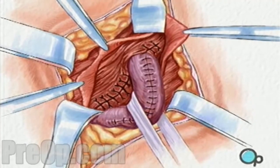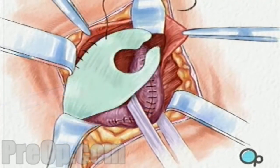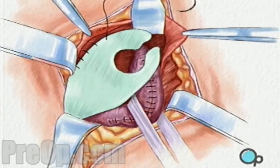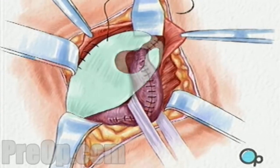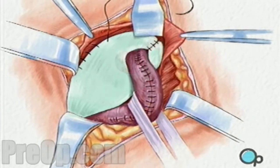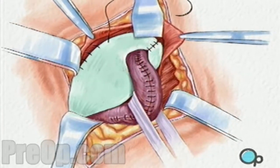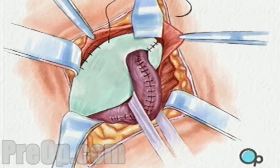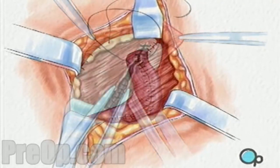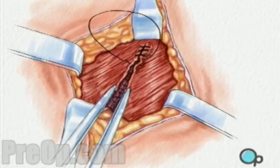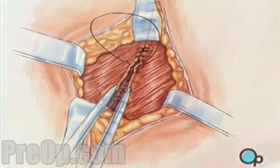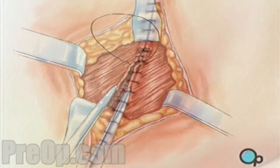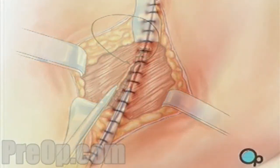In some instances, the surgeon will use a mesh patch, as we can see in this picture, to help reinforce this area. This is followed by the muscle layers and other tissues being sewn back together, and the skin is closed with sutures or staples as the final step.